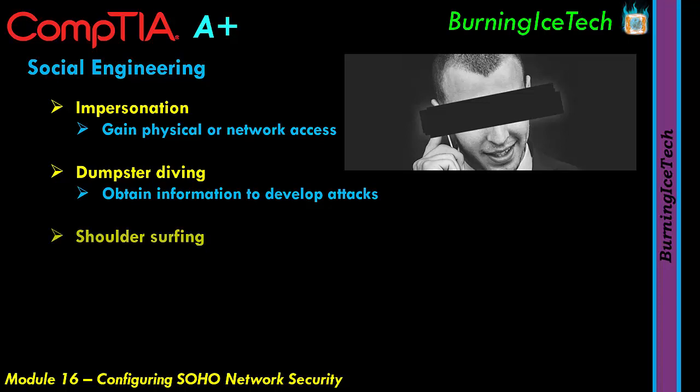Social engineering also includes something called shoulder surfing — which is to observe passwords and confidential information. Imagine you're standing at an ATM to withdraw some money. If I stand in the queue behind you, close enough, there's a possibility I could see the keys you're pressing on the keyboard and see what your PIN number is, or I could see what's on the screen. That is shoulder surfing. It's not limited to ATMs — this can be a matter of you sitting in your office and I'm in the same room, and when you're doing something on your machine, I'm paying close attention to the keys you're pressing, or paying close attention to what is on your screen from an angle.